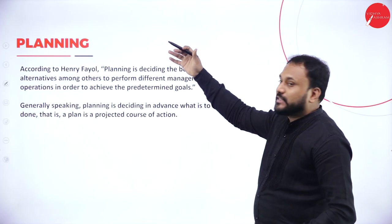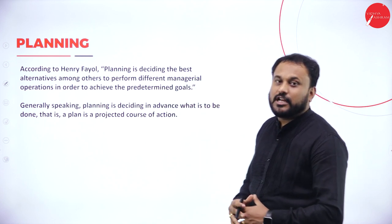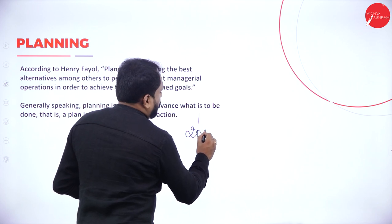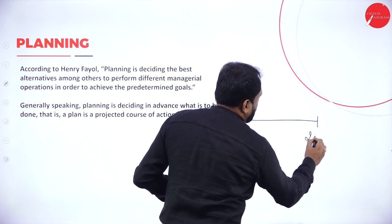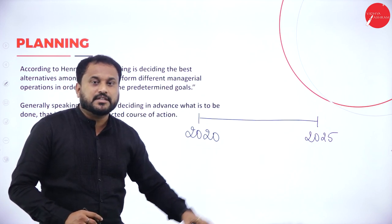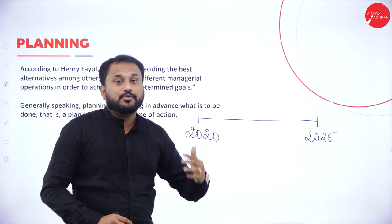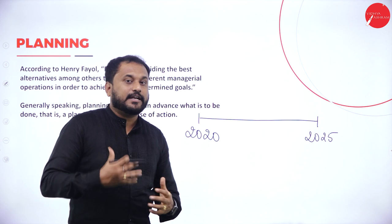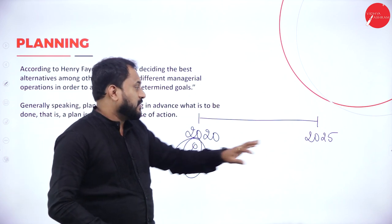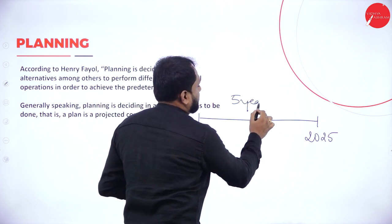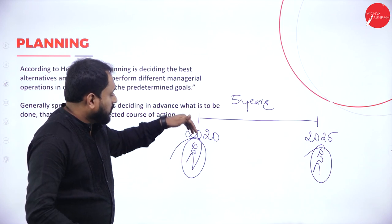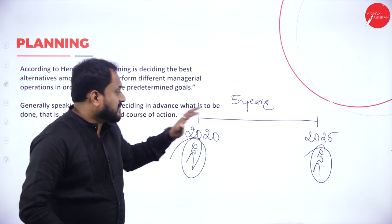Planning is all about bridging the gap between what you are and what you want to be. For example, say you are in 2020 and you are planning for 2025. Planning is a future course of action — you will only plan for the future and the present, not for what has already happened. So in 2020 you are there, and you want to do a five-year plan.